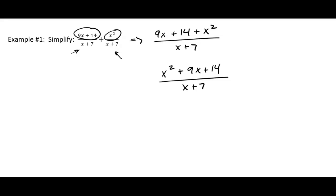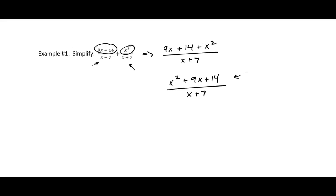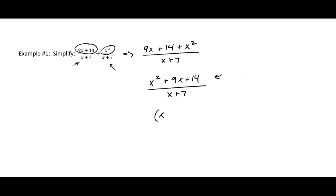Now I'm going to see if I can factor that numerator. We're back to simplifying a rational expression which we've done in the past. That numerator factors into (x plus 7) times (x plus 2) over x plus 7.